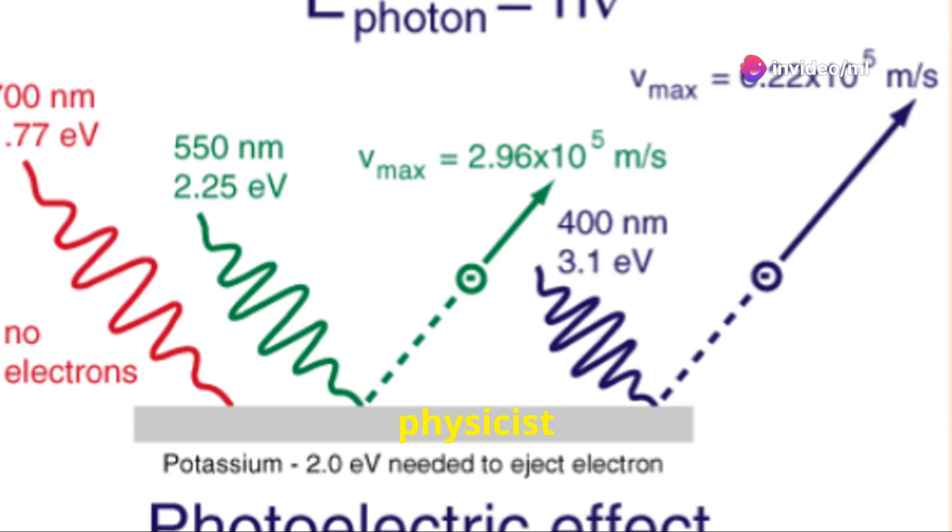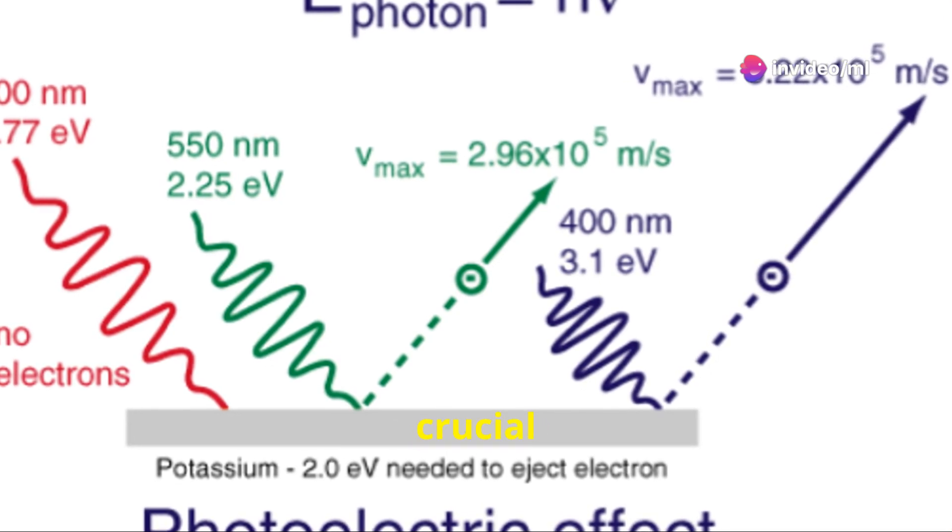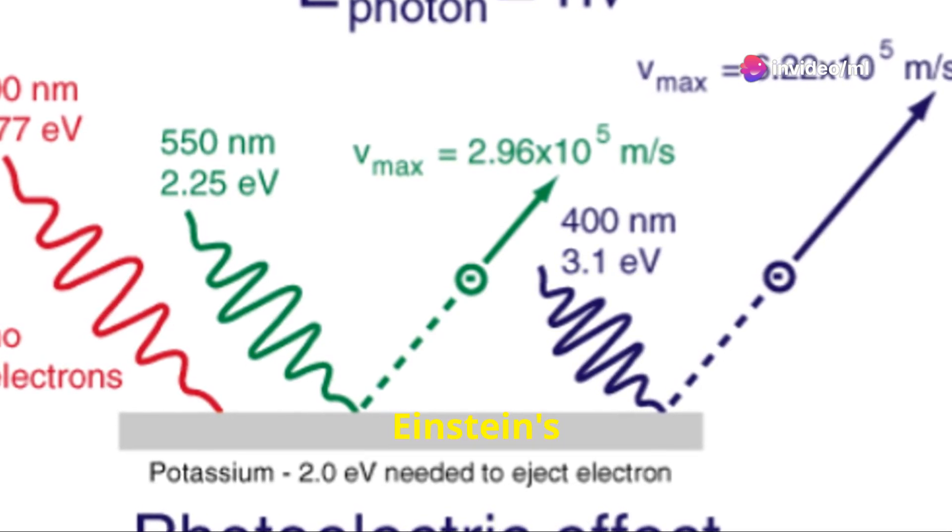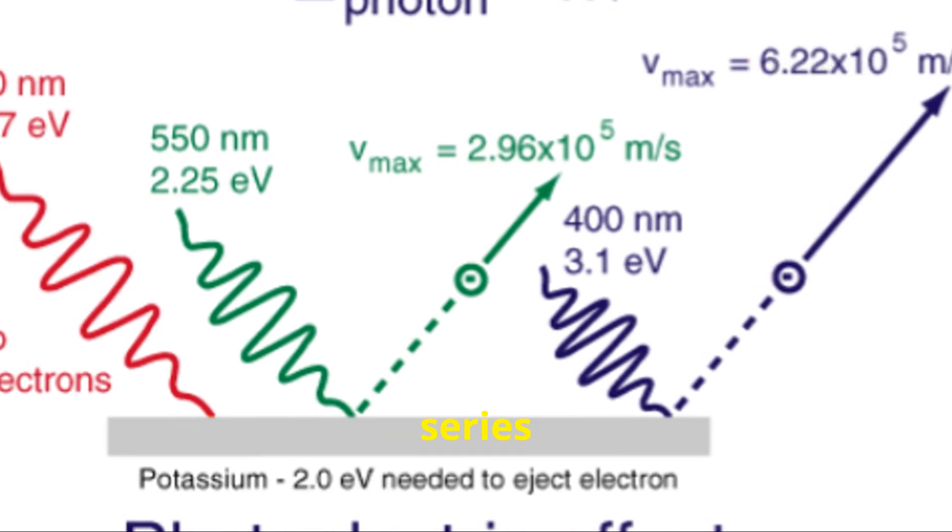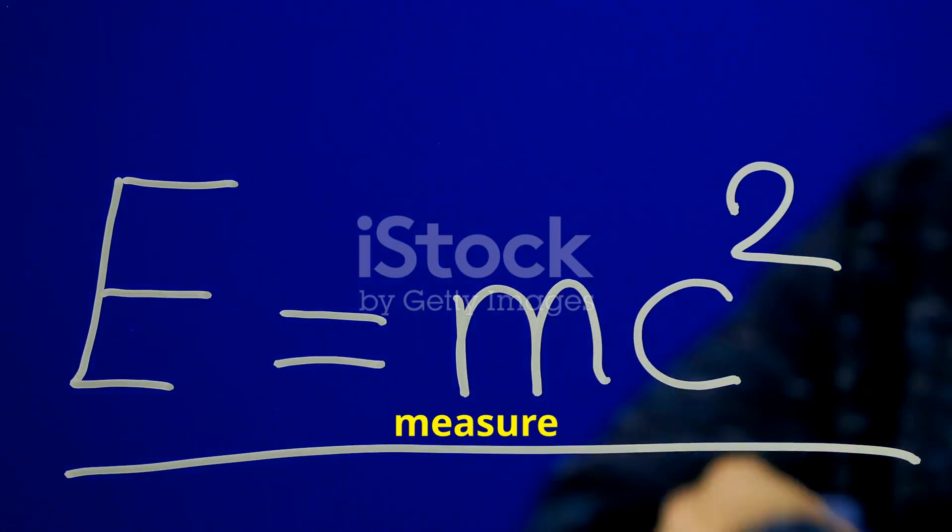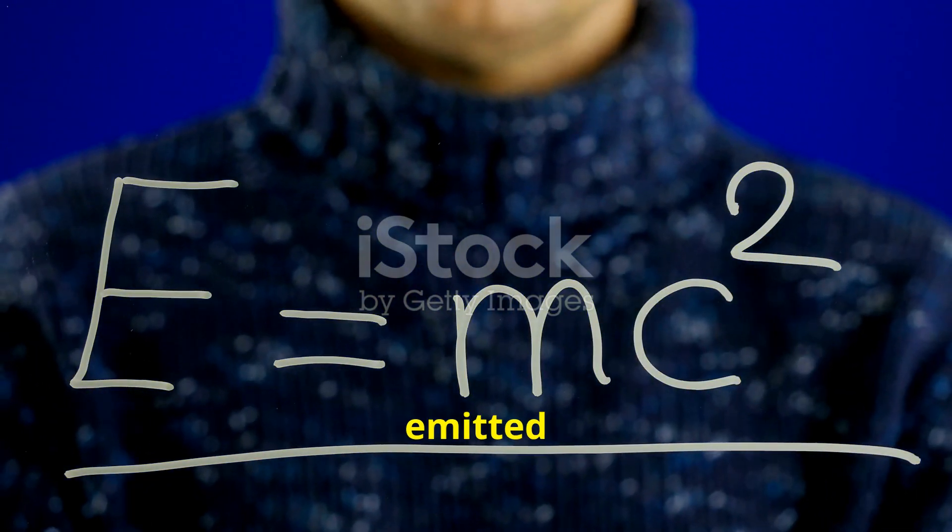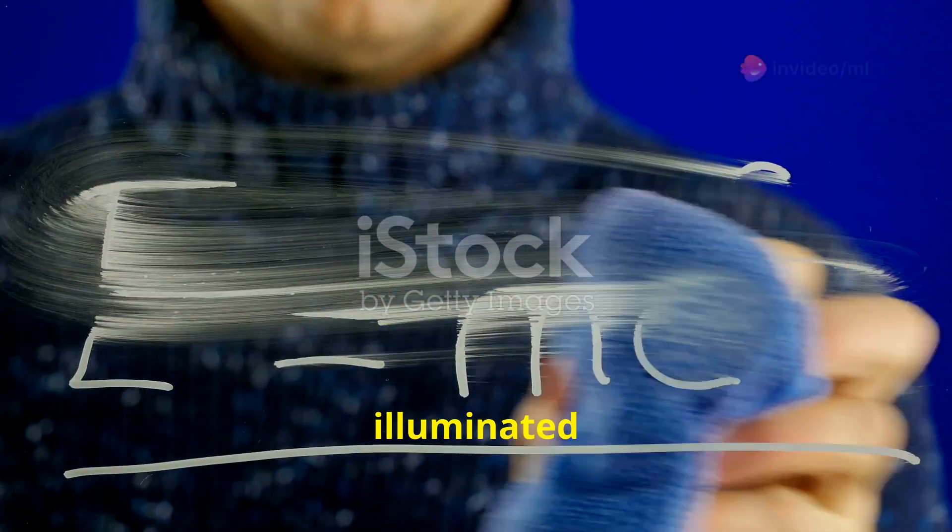American physicist Robert Millikan played a crucial role in confirming Einstein's theory. Millikan conducted a series of precise experiments to measure the charge and energy of electrons emitted from various metals